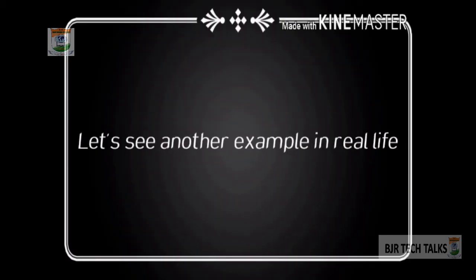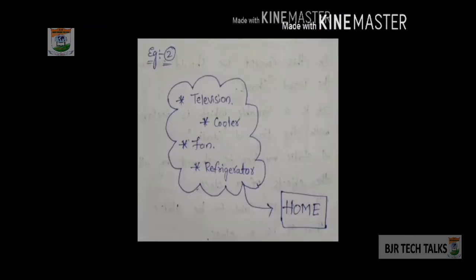Let's see another example in real life. Television, cooler, fan, refrigerator — these resources will be used by the family members at home. Television is not given separately to each one, and cooler also not separately to each one. Fan and refrigerator — also one resource used by all the family members in home.